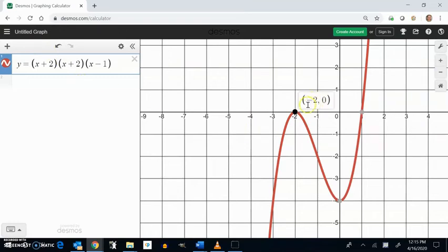Notice that the zero is at negative 2. We say that that has a multiplicity of 2. In other words, it happened twice.